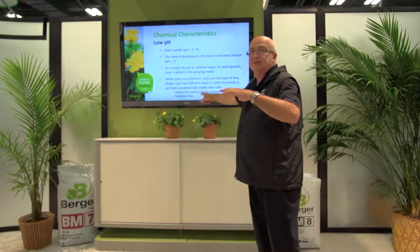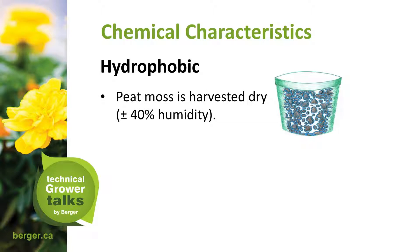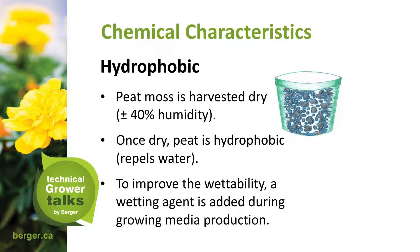Peat is hydrophobic — it doesn't like water and repels it. Very young peat will repel water even more than dark, humic peat, because once humic acid is present it creates a stickiness. Once dry, peat becomes hydrophobic. To improve wettability, a wetting agent is added during the growing media production.